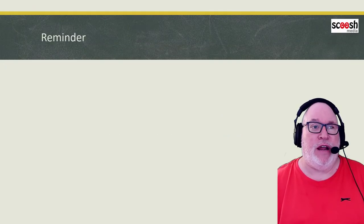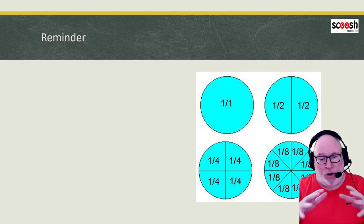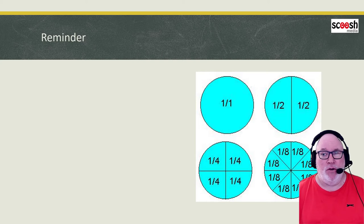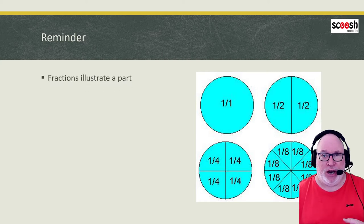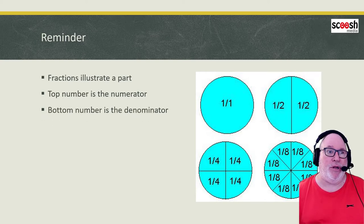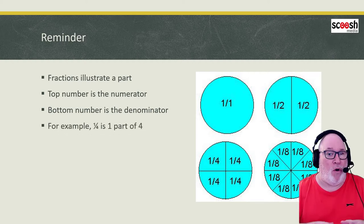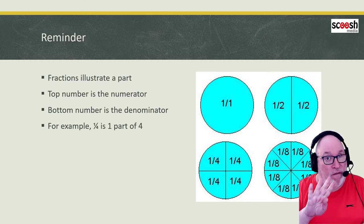Let's get started. So a wee reminder on fractions. What we have is an illustration here where I've put in a whole of a pie or a share. This is what fractions are - it's a part of. So we've got the whole which is one of one, we've got the halves, then we've halved them again to make quarters, and halved them again to make eighths. The top number is your numerator - that tells you how many of the parts there are. The bottom number is the denominator, which tells you how many total parts. So for example, a quarter is one part of four, one over four, which is your fraction.